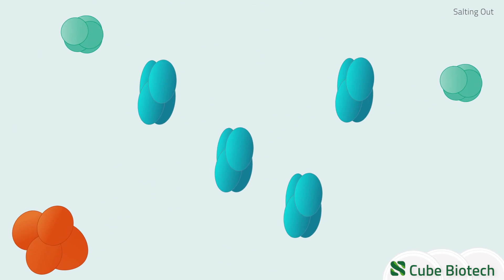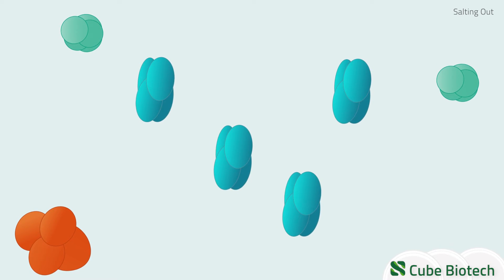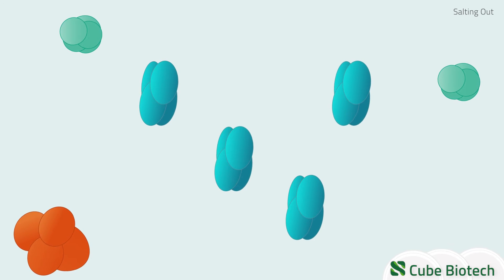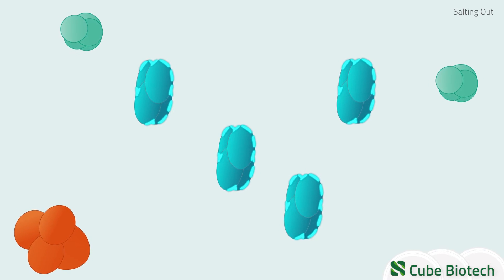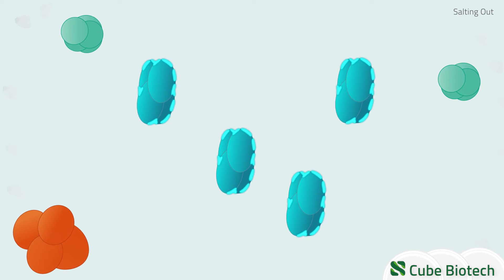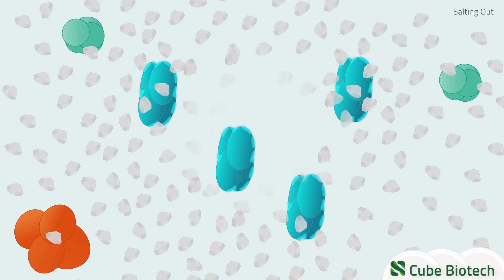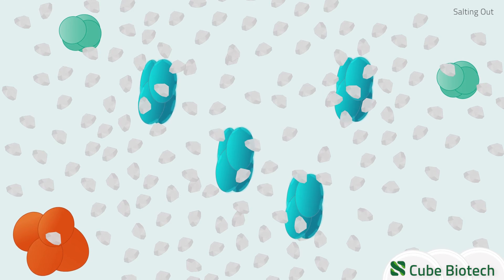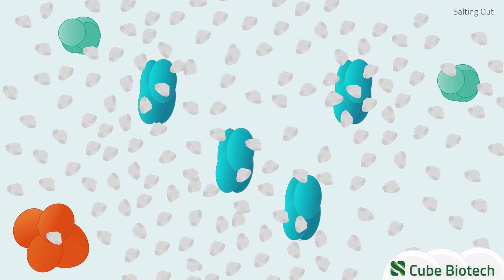Proteins differ in their solubility in water based on their amount of hydrophilic and hydrophobic amino acids. In a solution without salt, water molecules surround the hydrophilic part of the target protein and stabilize it through a hydration shell. Adding salt to your protein solution decreases the ratio of available hydration shell, because the hydrophilic parts of the protein and the salt ions compete to interact with it.